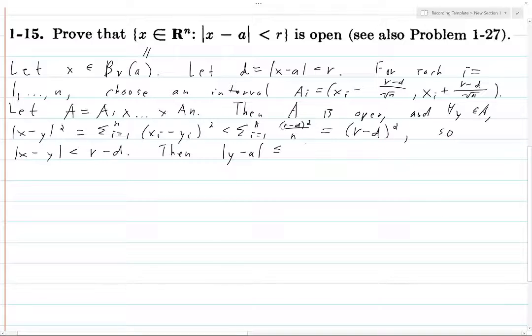|y-a| is less than or equal to, using the triangle inequality, |y-x| + |x-a|. But now we know that |y-x| is less than r-d, and |x-a|—well, |x-a| is equal to d. So we get this, which is equal to r.